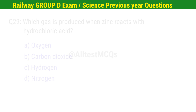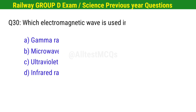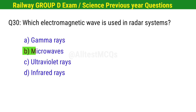Question No. 30. Which electromagnetic wave is used in radar systems? Right option is B. Microwaves.